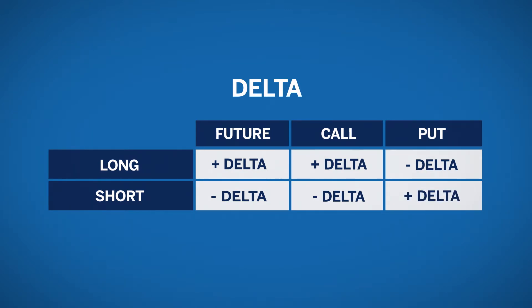If you are long deltas, you want upward market movement. If you are short deltas, you want downward movement.